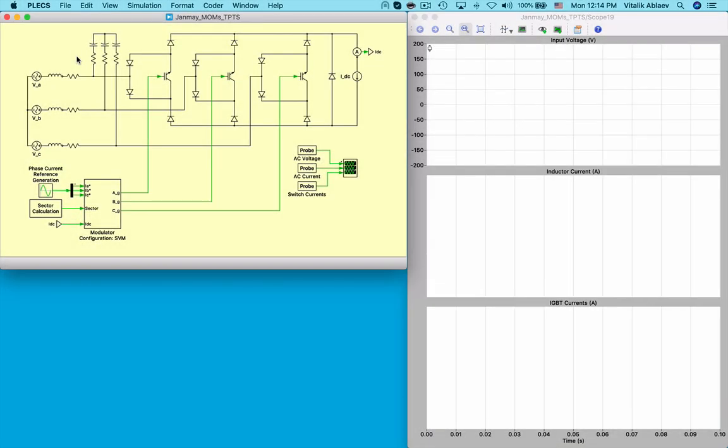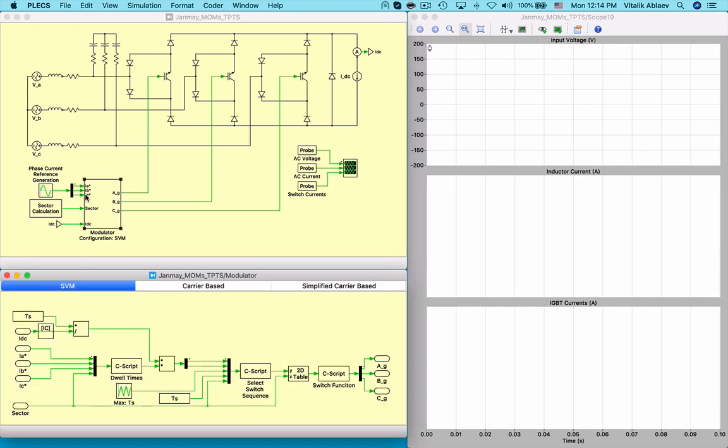Looking at Janamejaya's Plex model, we see the converter along with a controller subsystem. At the bottom of the model, we generate the three phase current references, which will be used for controls as we're running this model in open loop. We also generate the 12 phase current subsectors here.